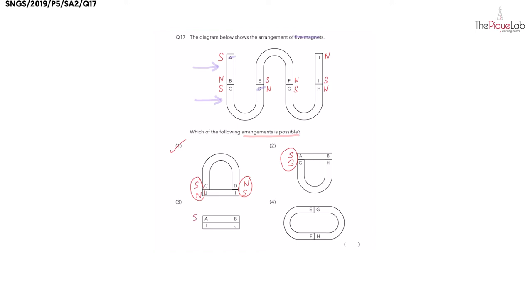A south and I is south—again, two like poles cannot be attracting one another. What about the last option here? E south and G south—same issue as options two and three. So this confirms our answer as option number one.